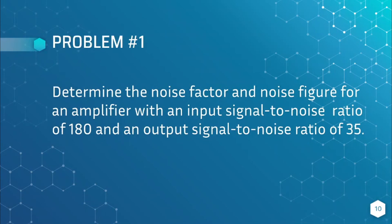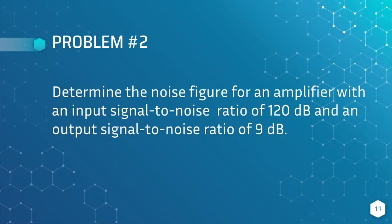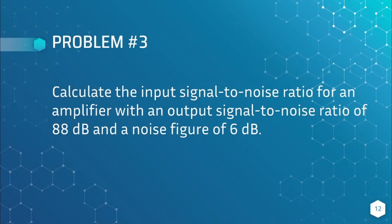Here are some practice problems. Problem 1: Determine the noise factor and noise figure for an amplifier with an input signal-to-noise power ratio of 35. Problem 2: Determine the noise figure for an amplifier with an input SNR of 120 dB and an output SNR of 9 dB. Problem 3: Calculate the input signal-to-noise ratio for an amplifier with an output SNR of 88 dB and a noise figure of 6 dB.